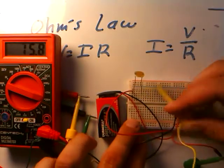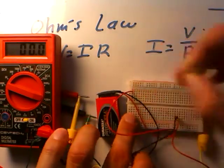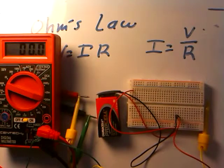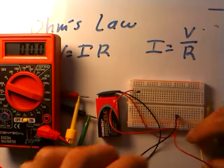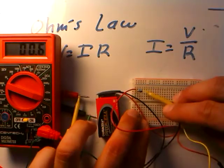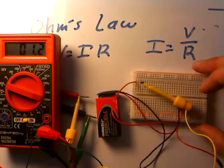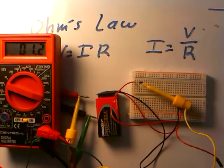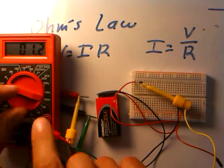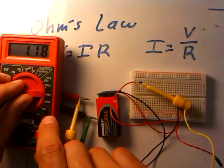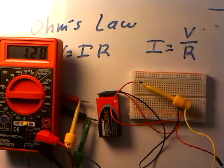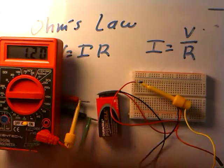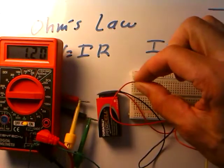We can repeat the same example with a thermistor — a temperature-dependent resistor whose resistance depends on temperature. Right away it has a much larger resistance, so I'll click down to a more sensitive scale. I'm getting about 1.1 milliamps flowing through this circuit with 9 volts across it — another example of Ohm's Law. Let's pinch the thermistor to heat it with our hand and see what happens to the current.